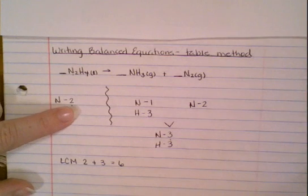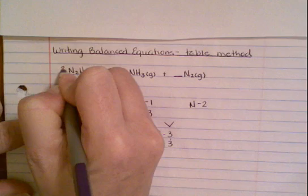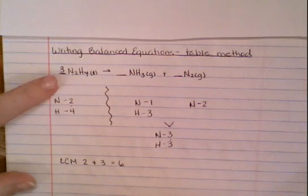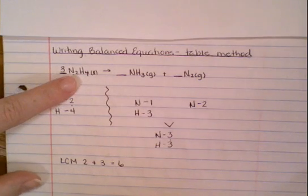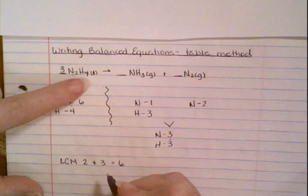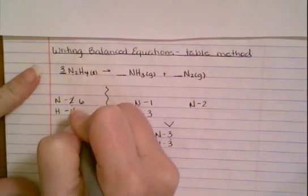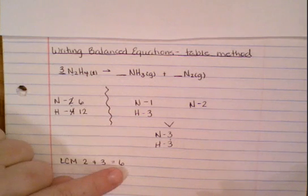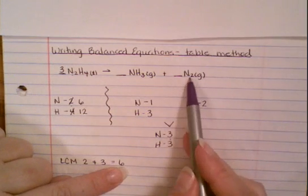So what we need to do is figure out what do we need to multiply two by to get six. We need to multiply by three, so we're going to put a three as our coefficient. Now that changes everything—that's going to be three times two is six, and three times four is twelve. And over here I also need to figure out how to get six.